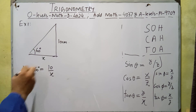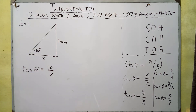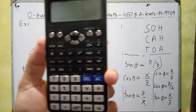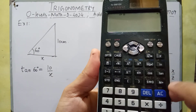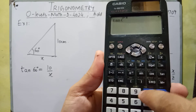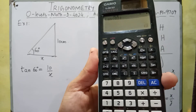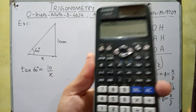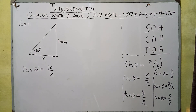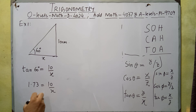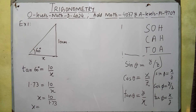We can find tan 60 using a calculator. Tan 60 equals the square root of 3, or approximately 1.73. So 1.73 equals 10 over X, which means X equals 10 over 1.73. Therefore X equals approximately 5.78 cm.